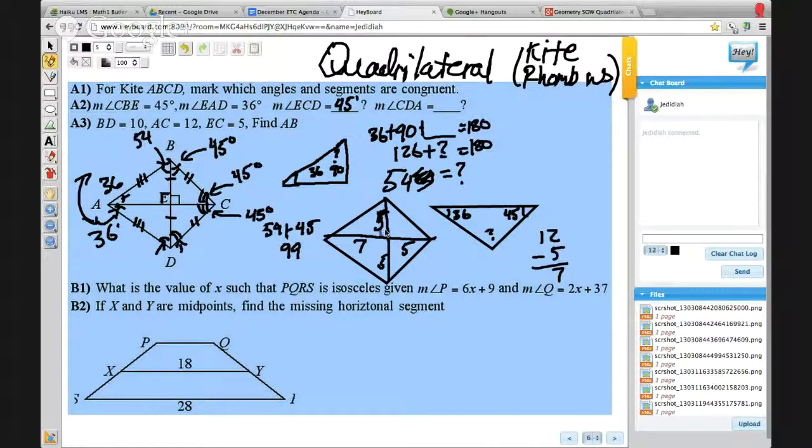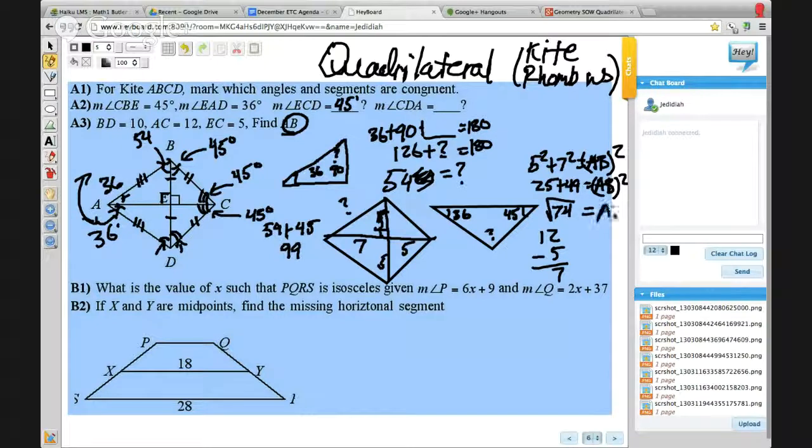Okay. So once we know that and this is a right triangle, it's asking us to find AB which is this one there. Well that's the right triangle Pythagorean theorem. We have 5 squared plus 7 squared equals AB squared. And then that's 25 and 49 equals AB squared. And then when you add those together you would get 74. So 74 square rooted is AB. And there we go. That's it for that one.